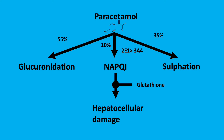Paracetamol metabolism is mainly by two key pathways: glucuronidation and sulfation at 55% and 35% respectively. A minor pathway of 10% is via cytochrome P450 2E1 and 3A4, which produces NAPQI, a toxic metabolite.